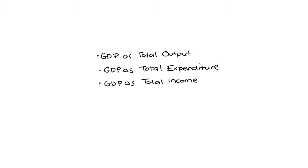Hi, everyone. In this video, I'm going to discuss three ways that economists think and talk about gross domestic product. We think and talk about GDP in terms of total output, but also as total expenditure and also as total income. In this video, I'm going to discuss why these three ways of talking and thinking about GDP are equally valid and equally legitimate.